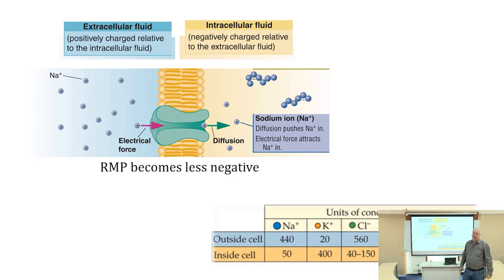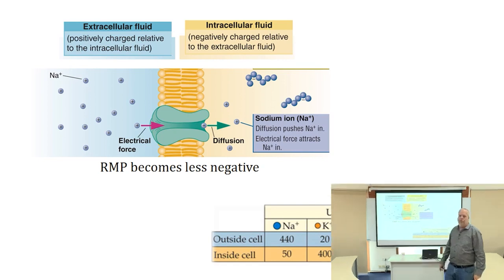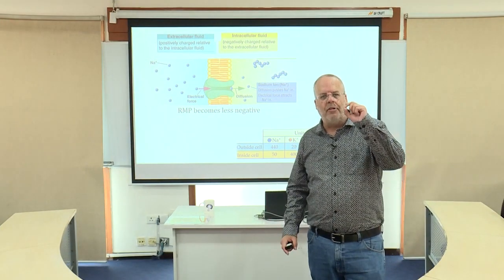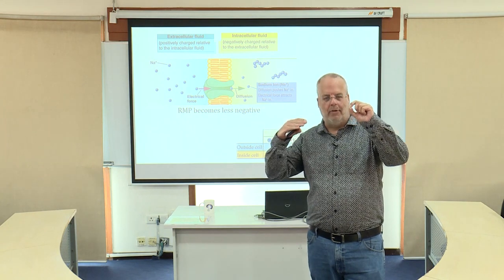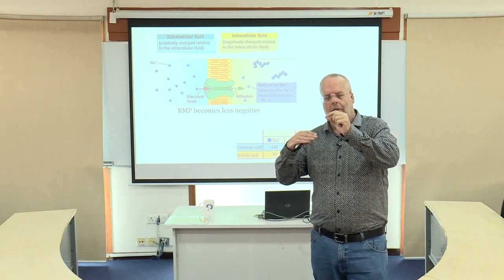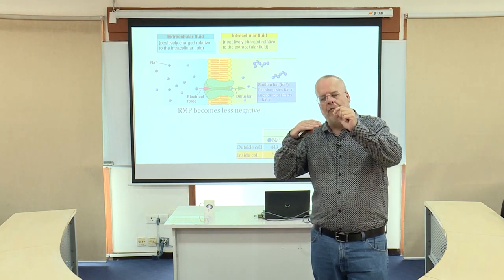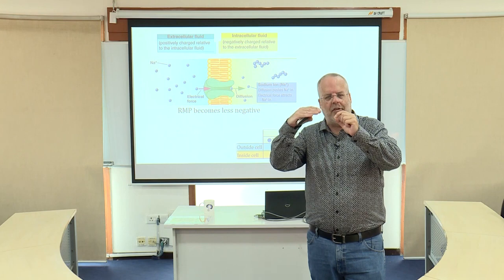Sodium is a positive ion and the inside of the neuron is negative, which means that positive ion is attracted to the negative interior. So the electrical force is also going to push sodium to the inside. Both the electrical force and the diffusion force are pushing sodium into the interior of the cell. As more and more positive ions flow in, the interior becomes less negative over time — from negative 70 to negative 68, negative 66, etc.